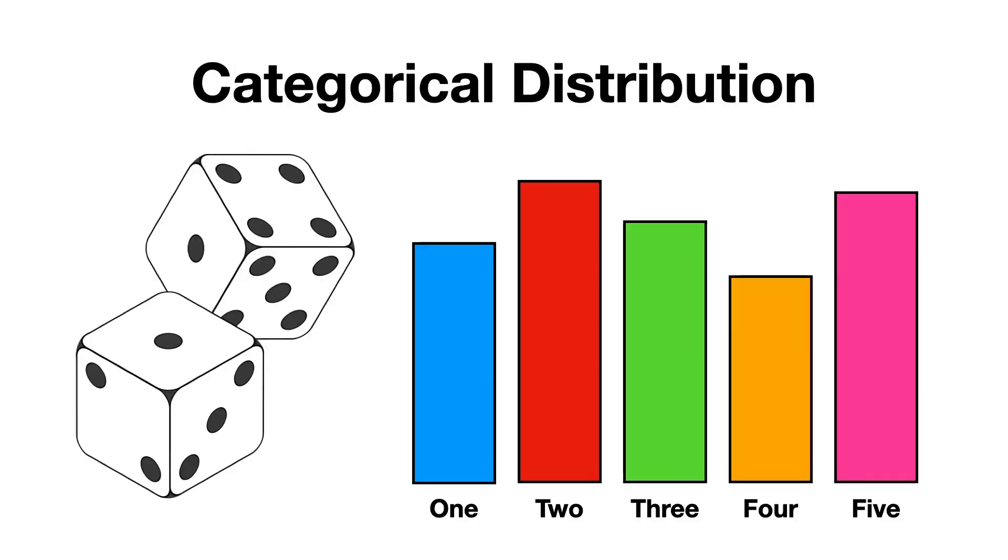Now, let's move to situations where we have more than two possible outcomes in a single trial. This leads us to the categorical distribution. The categorical distribution generalizes the Bernoulli distribution by allowing for more than two possible outcomes, each with its own probability.